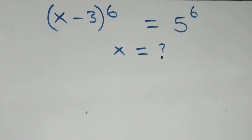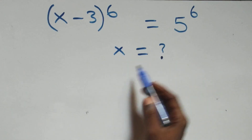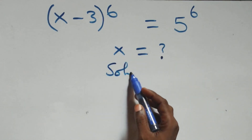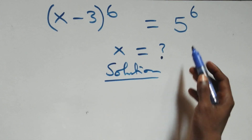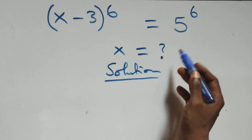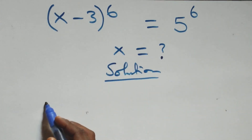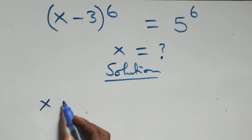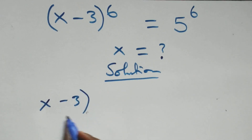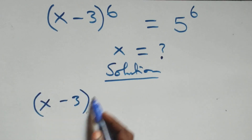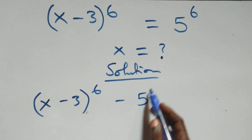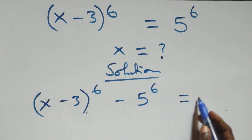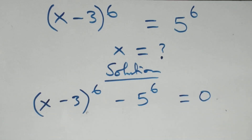Hello, you are welcome. How to solve this nice exponential equation — solution from here. What we have here: we take 5 raised to the power 6 to the left-hand side, that is, we have x minus 3, then 4 raised to the power 6, minus 5 raised to the power 6, equals to 0.